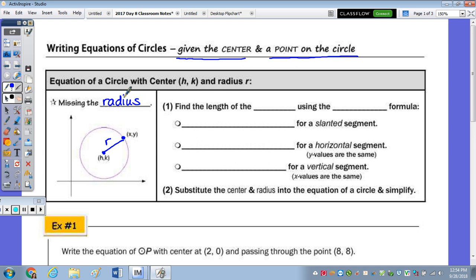So we need to find or calculate the radius of the circle. How do we find the length of the radius? What formula do we use? Distance. Now, the distance formula is different depending on the segment that you have. If you don't have graph paper, if you don't have a picture, you will always have to use a formula.